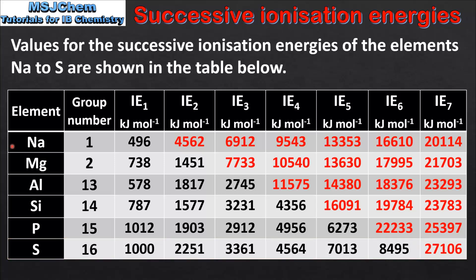To summarize, we look for the large increase in ionization energy which tells us the number of valence electrons in the element. For group 1 elements the large increase will be after the 1st ionization, for group 2 after the 2nd ionization, group 13 after the 3rd ionization, and so on.